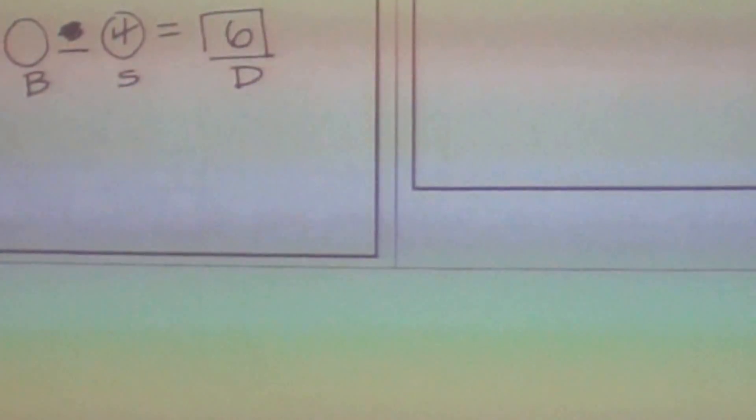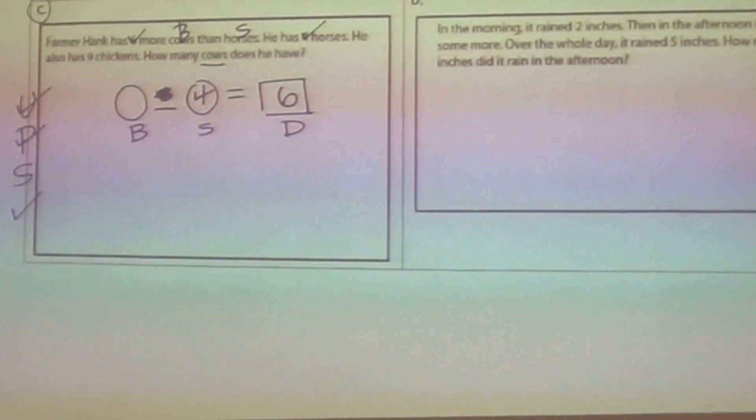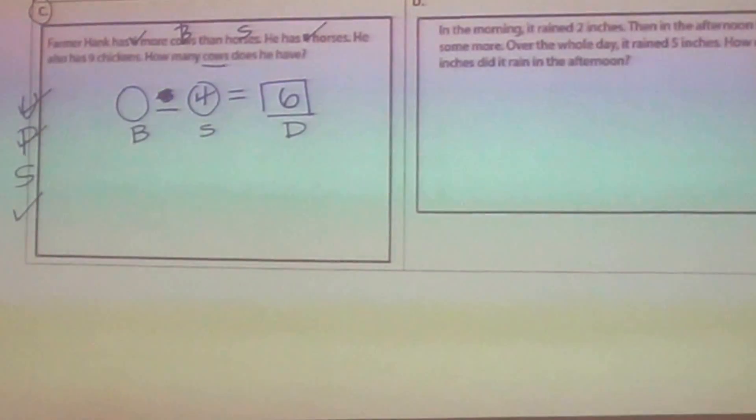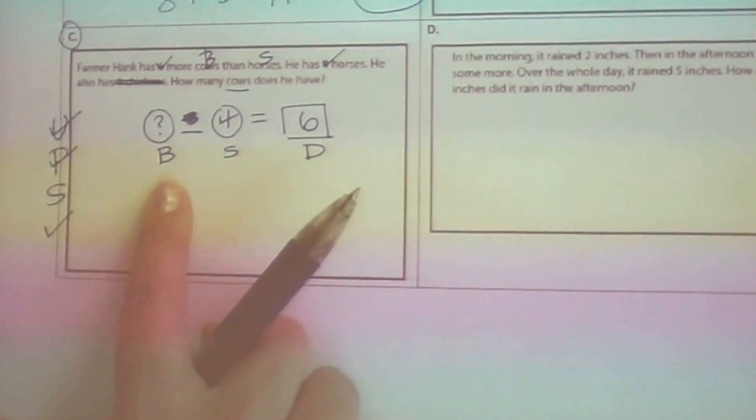He has four horses. Is four a number that we need? Yes — and is it the bigger amount? No, the smaller. So I check off four and write it in the smaller box. He also has nine chickens — do we need that number? No. Why not? It doesn't ask about chickens. So we cross it out — that's called irrelevant information. How many cows does he have? We don't know yet — we're going to solve for that, so I put a question mark in the bigger box.